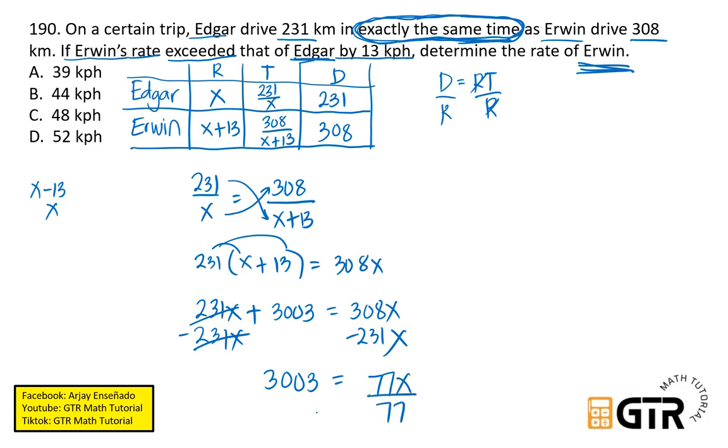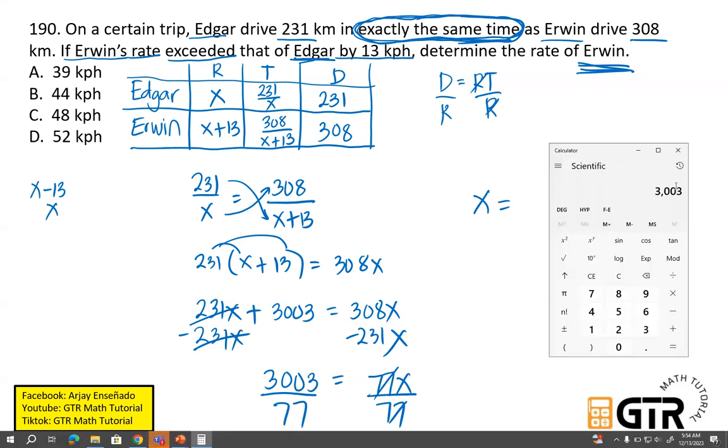And then finally, divide both sides by 77. So therefore, ang rate ni Edgar, i-calculator lang natin. 3,003 divided by 77. So the answer is 39 ang rate ni Edgar.